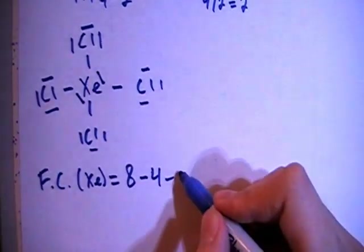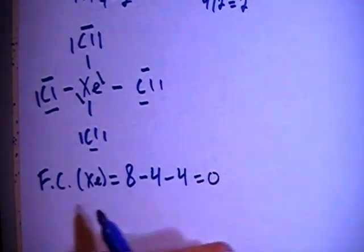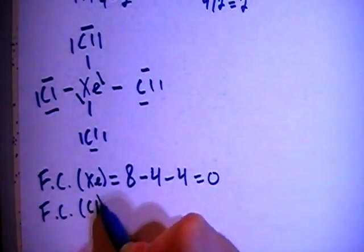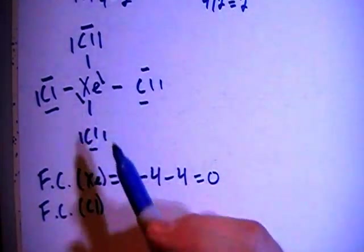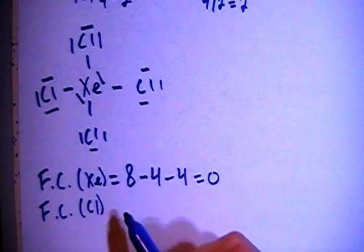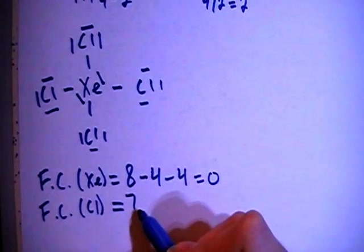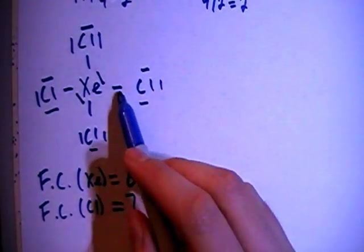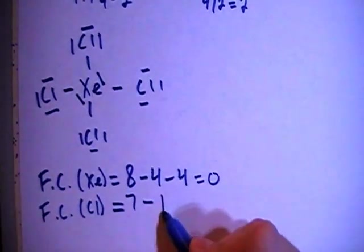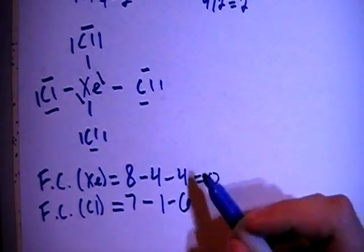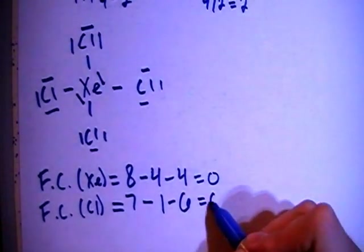And then the formal charge on each of the chlorines. Each chlorine has the same setup, so each of their formal charges should be equal. That will be 7 valence brought in, minus 1 bond for each chlorine, minus 1, 2, 3, 4, 5, 6 non-bonding electrons for each chlorine for a formal charge of 0.